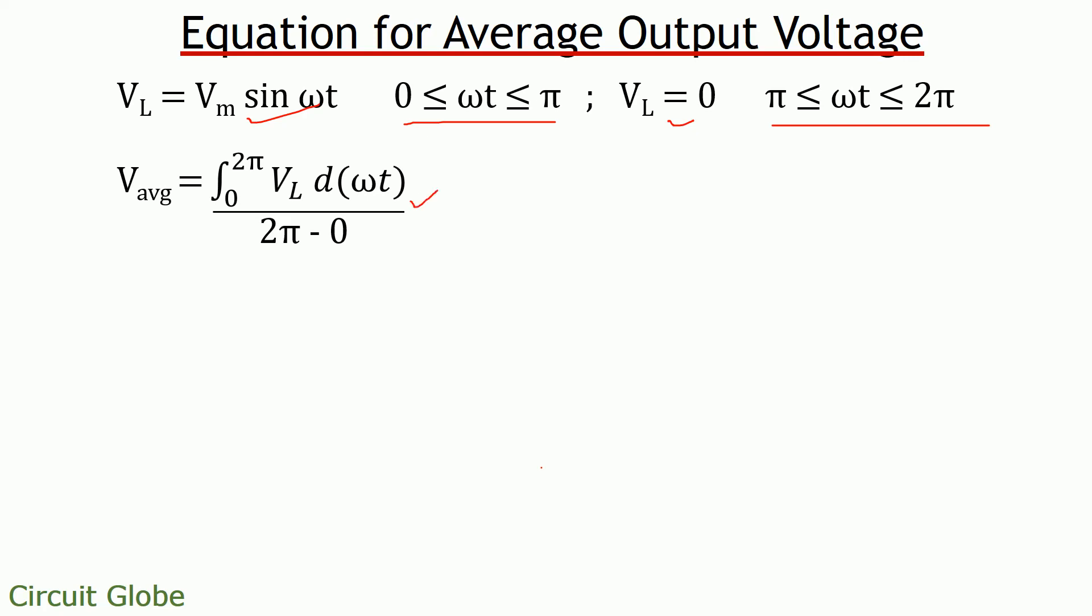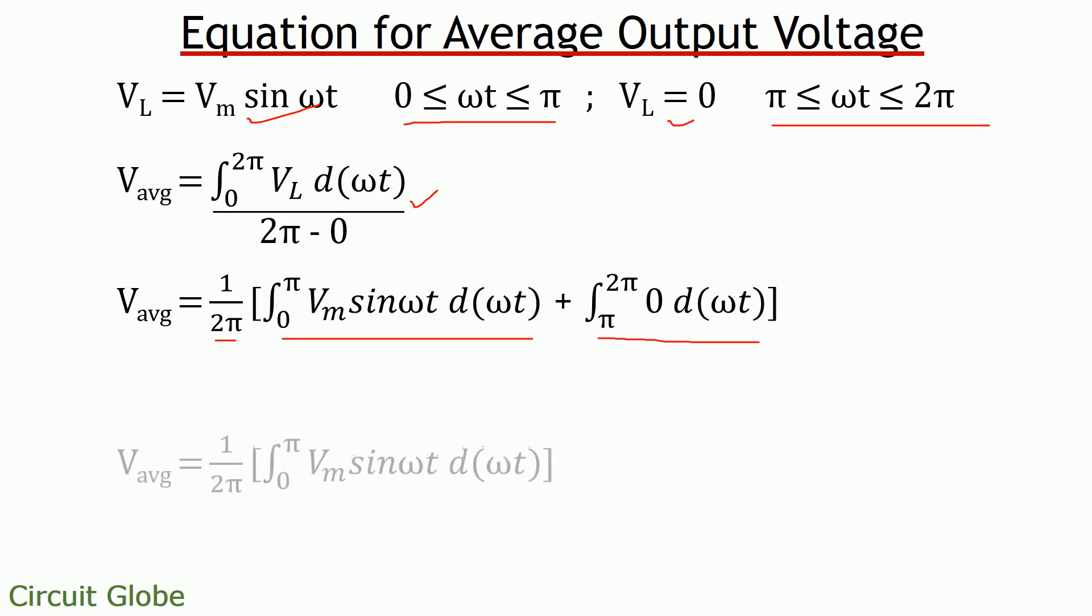And this is the equation that shows the integration of output voltage in order to determine the average voltage. Now on separating the limits of integration we get V average is equal to 1 upon 2 pi integration 0 to pi Vm sin omega t d omega t plus integration pi to 2 pi 0 d omega t and we know integration of 0 is 0.